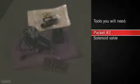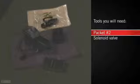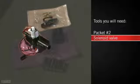The next step is installing the electronics. For the first part of this step, you will need packet number 2 from the box, as well as the solenoid valve. You'll use the other part shown for step 2b.